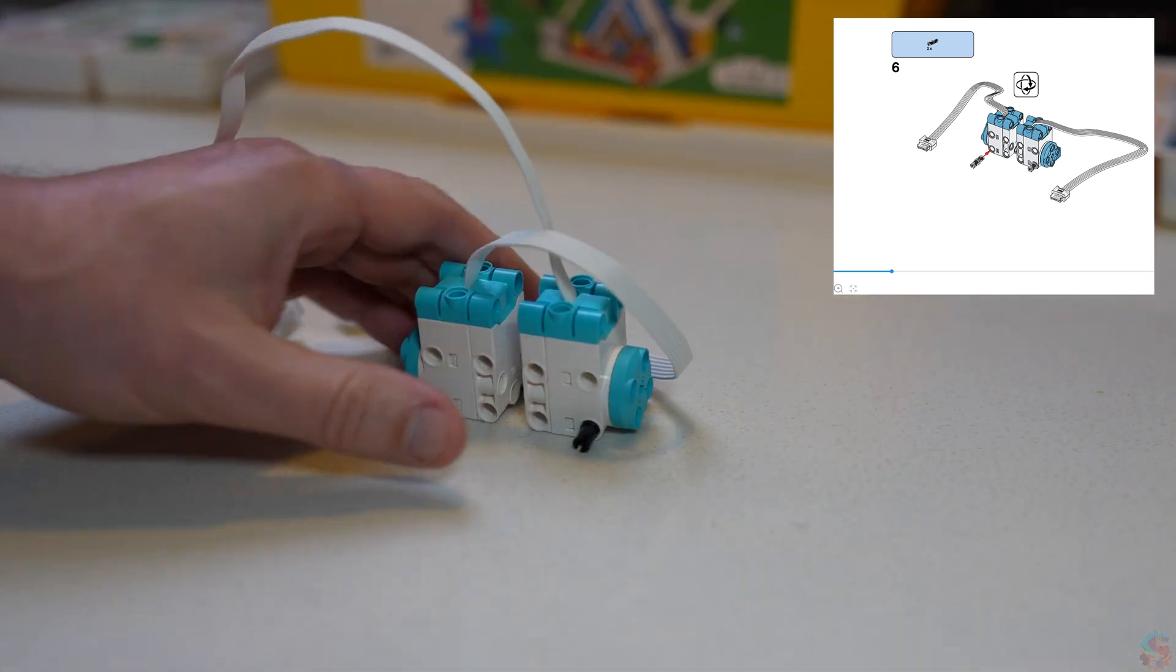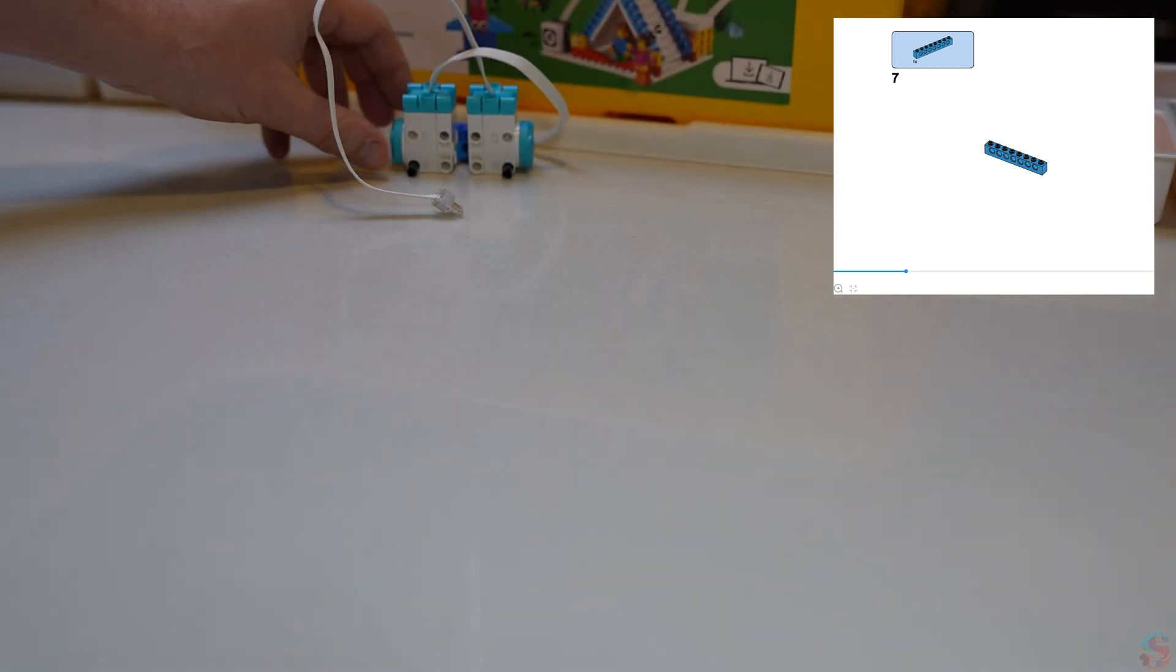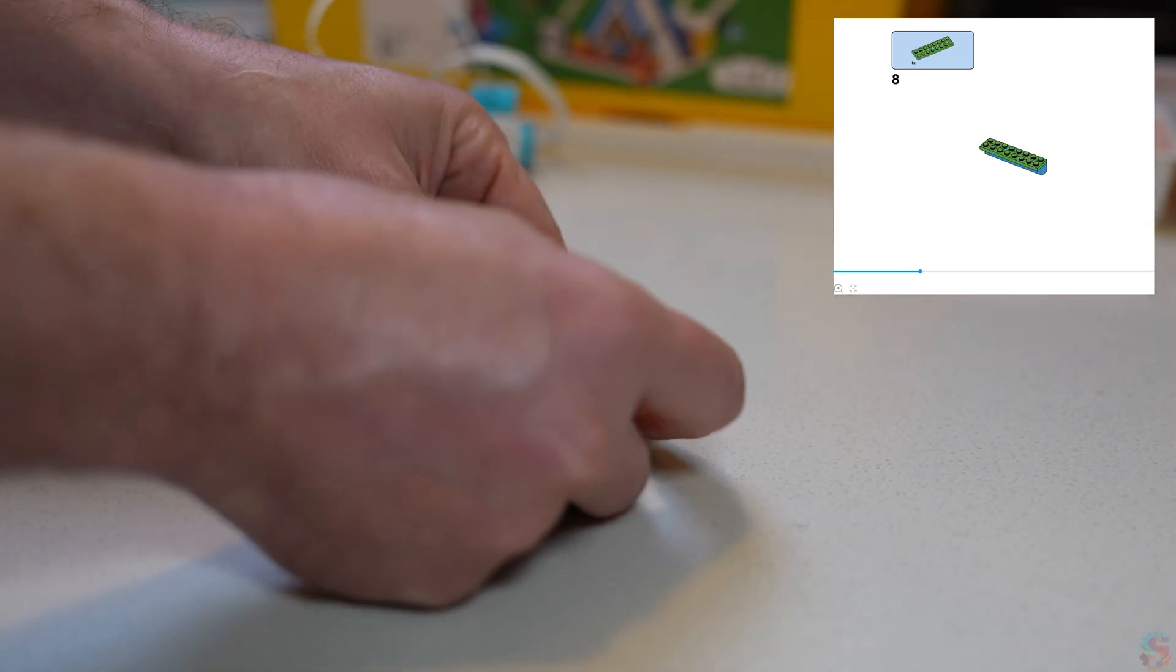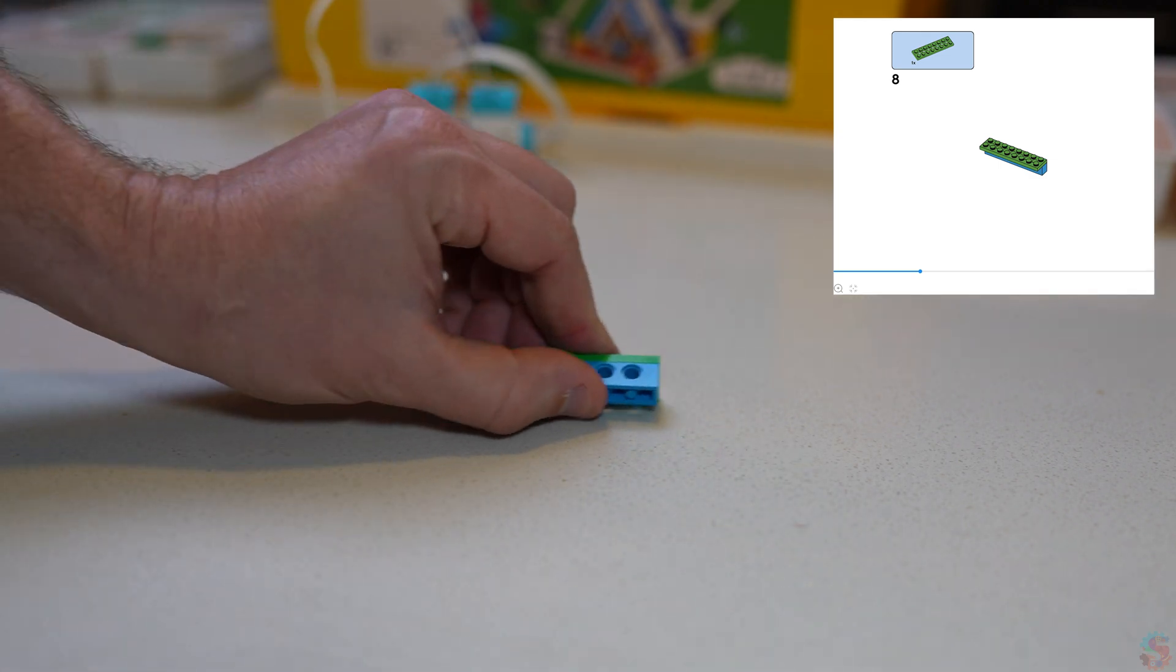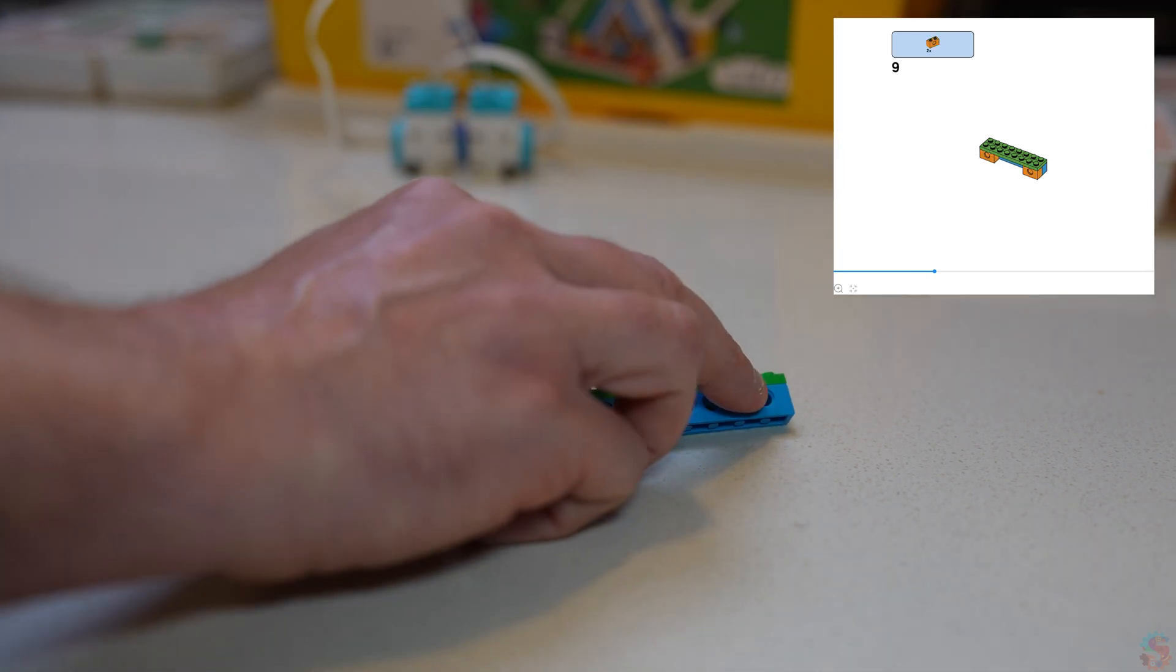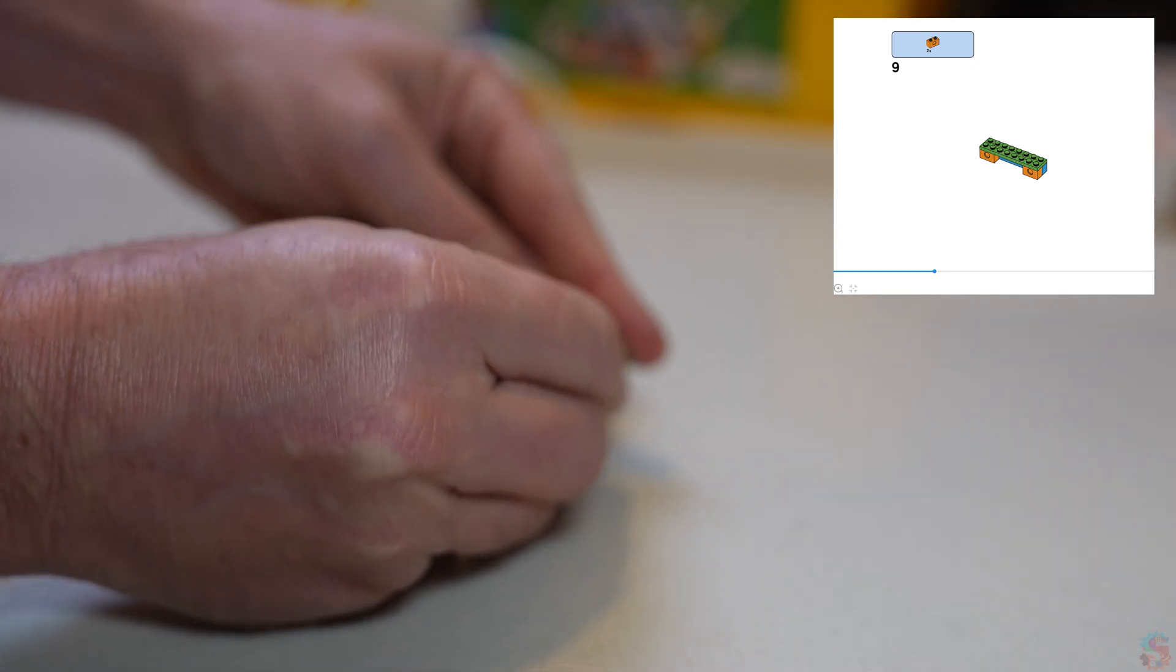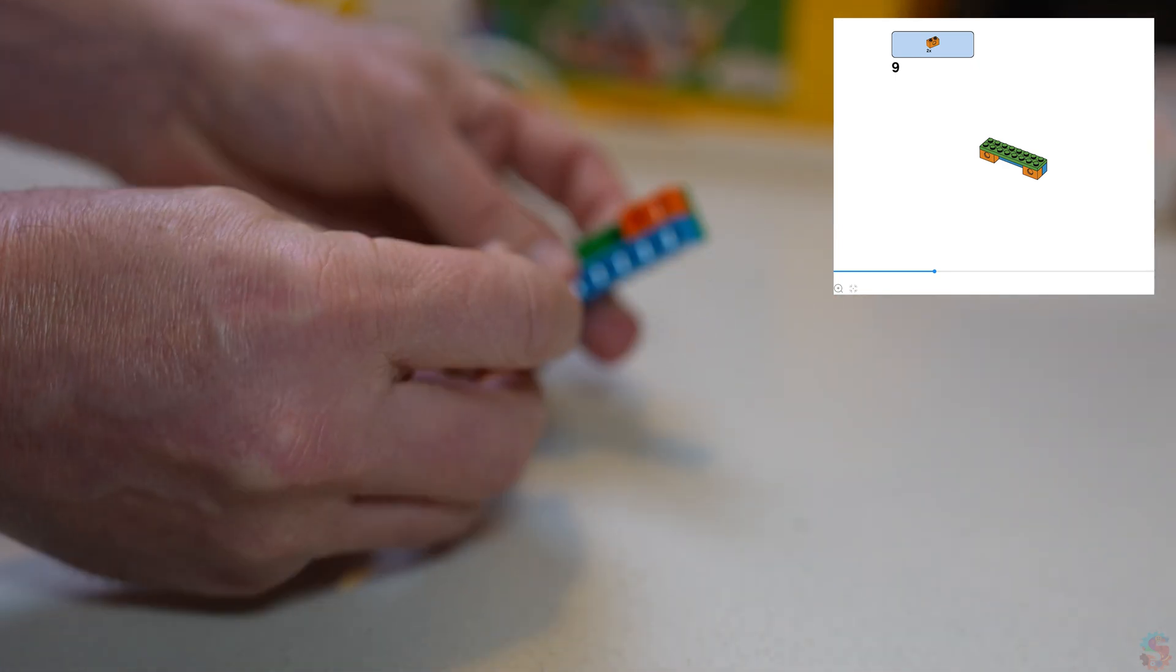We're going to move that out of the way, and we're ready for a blue beam. On top of the blue beam, we're going to put one of these flat green pieces. On the back side of that blue beam, but still under the green pieces, we're going to put two orange pieces that have a single hole inside of them.